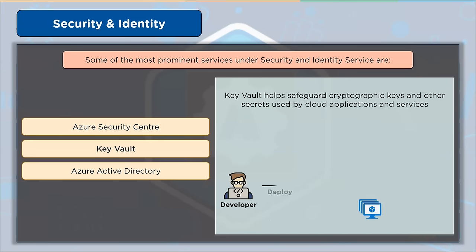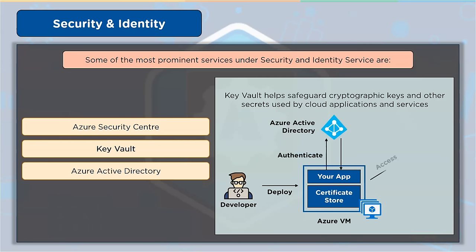Azure Key Vault is a cloud service for storing and accessing secrets in a secure manner — anything you want to restrict access to, such as API keys, passwords, certificates, or cryptographic keys. The Key Vault service supports two types of containers: Vaults and managed hardware security module (HSM) pools. Software as well as HSM-backed keys, secrets, and certificates can be stored in Vaults, while managed HSM pools only support HSM-backed keys.